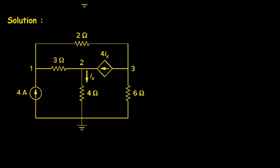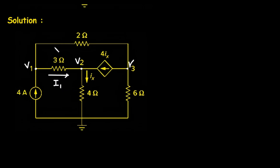Solution: First of all we will take this circuit. Let's assume this is node 1 with voltage V1, this is node 2 with voltage V2, and this is node 3 with voltage V3. We will assume the direction of currents — let's say this is current I1, this is current I2, and this is current I3 — all directed towards the reference node, because its voltage is 0V.